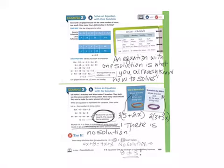Gil makes 3 bracelets and Mika makes 2 bracelets. They both use the same number of string colors. How many colors should they use to make the same amount of money? You can see from the sign that Gil's bracelets cost $5 per bracelet plus $2 for each string color. The expression 3 times the quantity 5 plus 2x represents 3 bracelets at $5 plus $2 per string color for Gil's bracelets. Bracelets by Mika cost $3 per bracelet and $3 for each string color. The expression 2 times the quantity 3 plus 3x is an expression that represents the cost of 2 bracelets made by Mika.